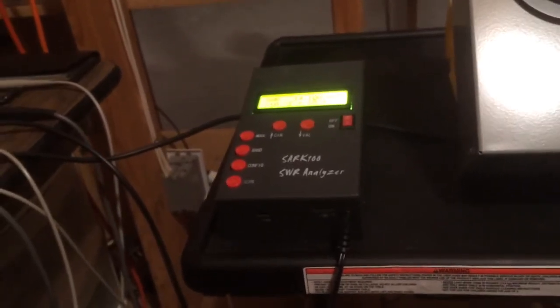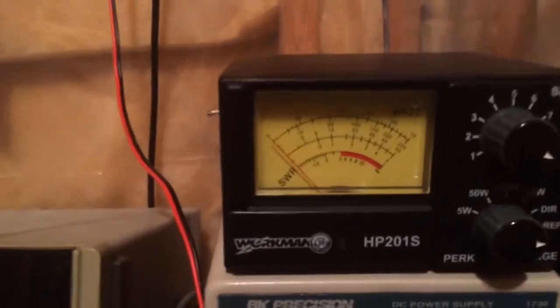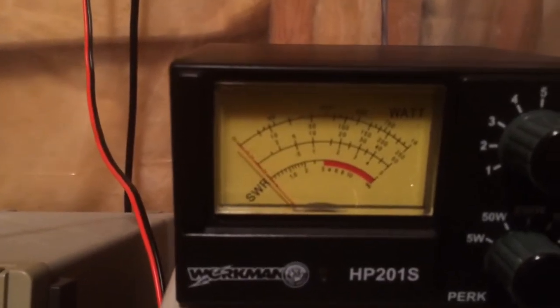So we get considerable differences in our instrumentation. We use the antenna analyzer, we get one set of readings which are on the high side. We use the inline SWR meter and we get a whole different set of readings.